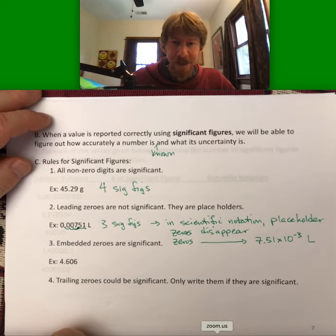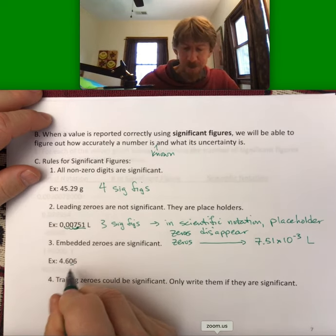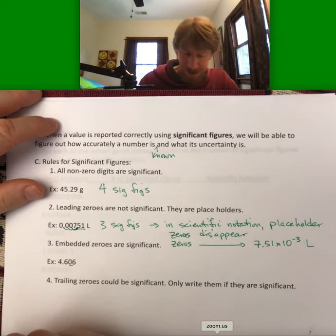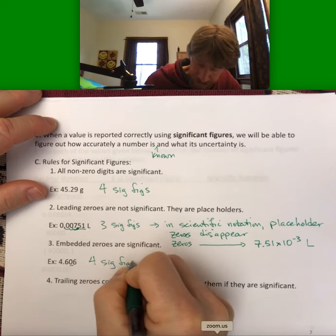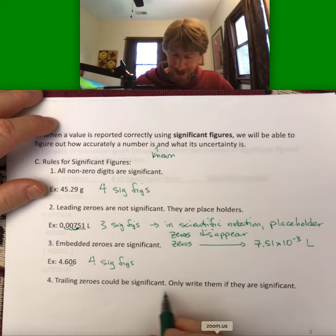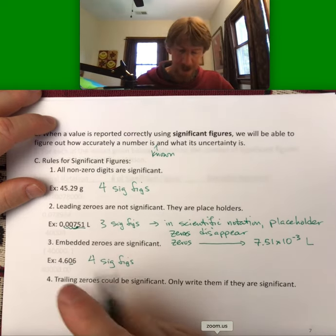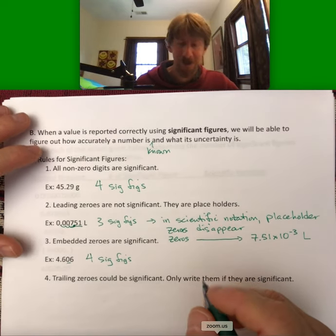Embedded zeros are significant—embedded means they're between two non-zero digits. So this has four sig figs. And trailing zeros could be significant; only write them if they are significant. Let's do some examples of this rule.